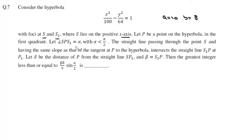Let angle sp s1 be alpha, with alpha less than pi by 2. A straight line passing through point s and having the same slope as that of the tangent at p to the hyperbola intersects the straight line s1p at p1. Let delta be the distance of p from straight line sp1, and beta equals s1p. Then the greatest integer less than or equal to beta delta upon 9 sin alpha by 2.